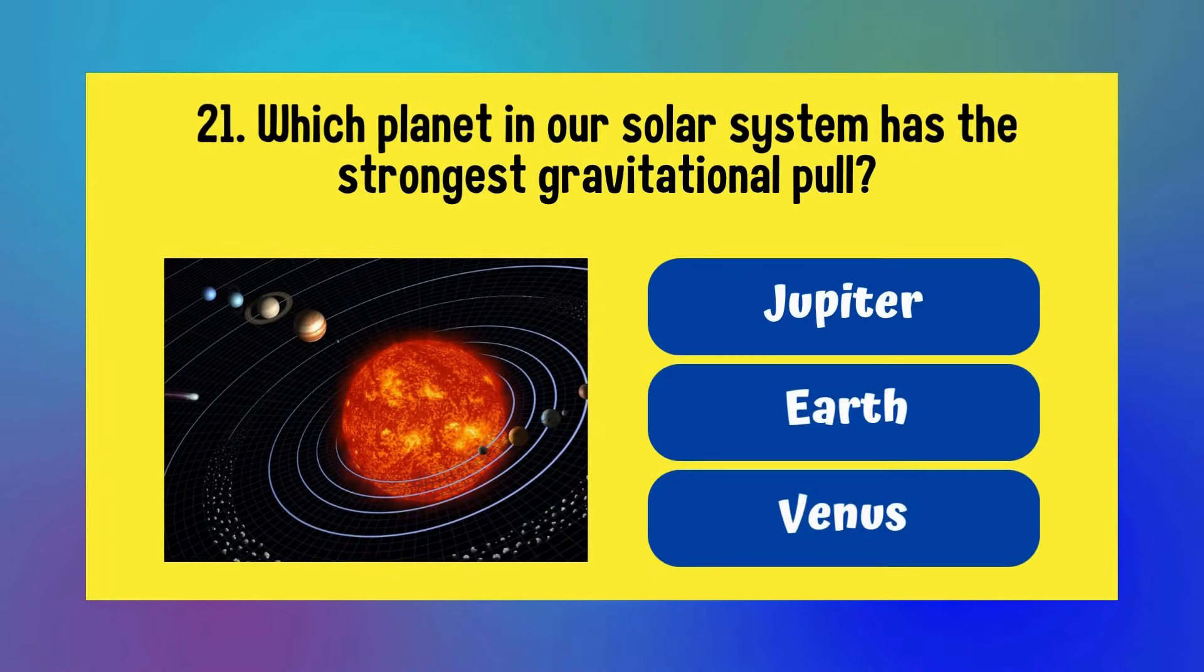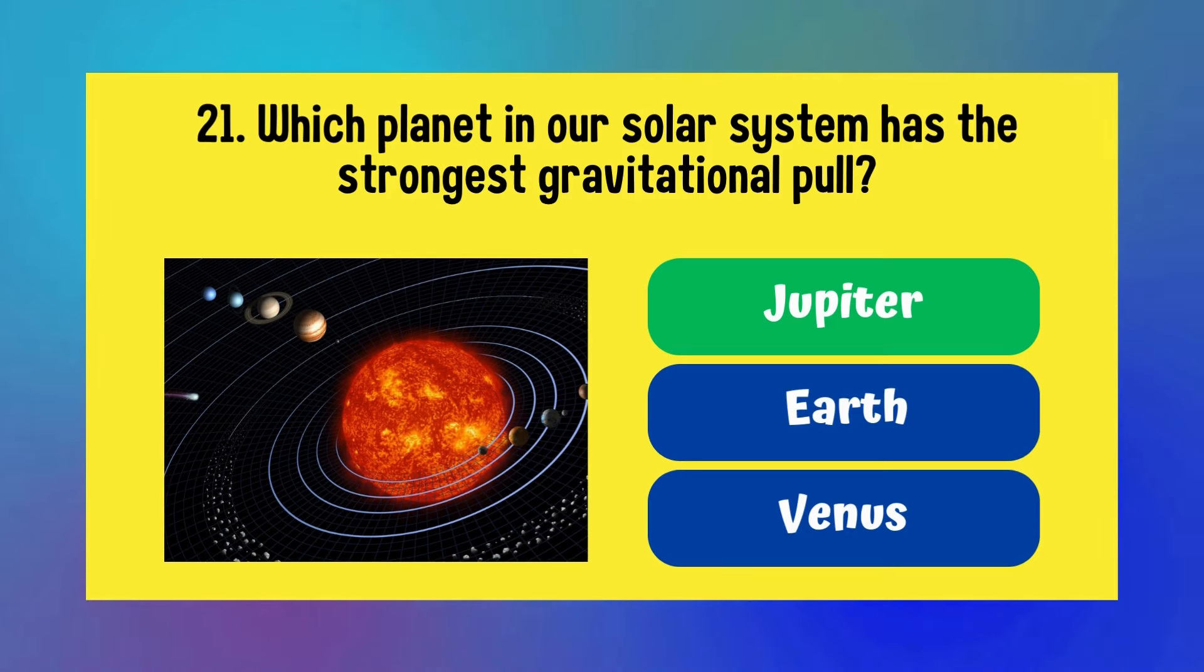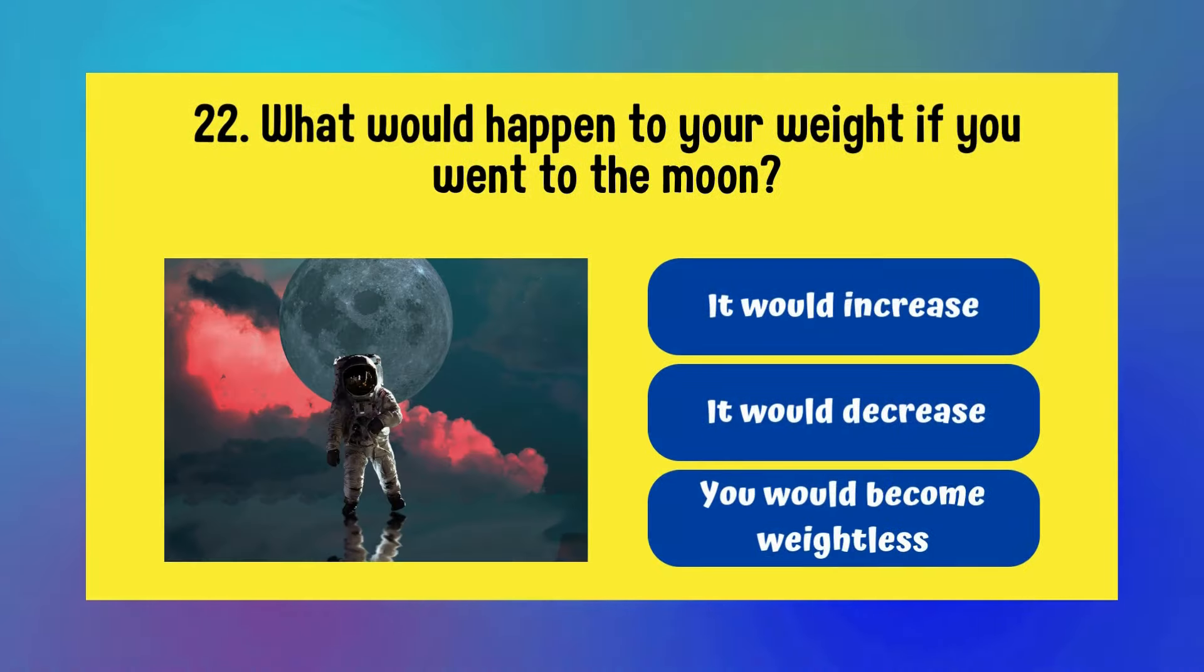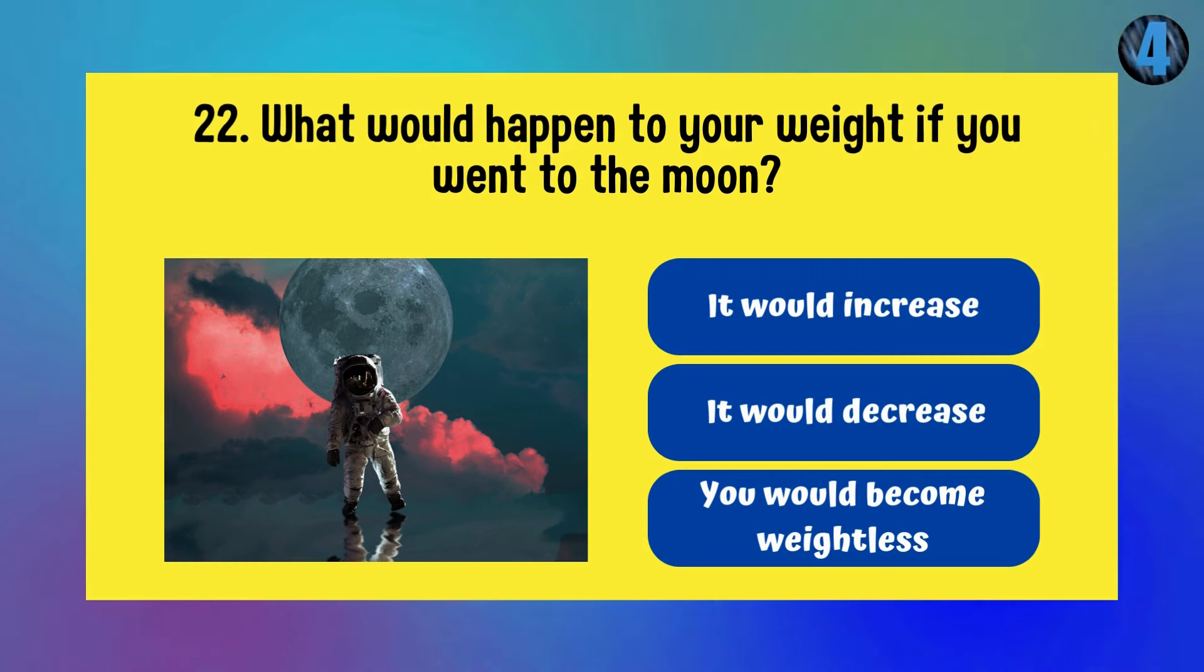Which planet in our solar system has the strongest gravitational pull? Jupiter, Earth, or Venus? It is Jupiter. What would happen to your weight if you went to the moon? It would increase, it would decrease, or you would become weightless? Answer is it would decrease.